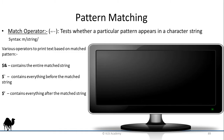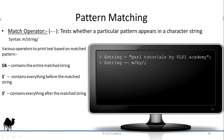Let's see one example. Assume there is a string variable with value 'perl tutorials by VLSI Academy'. To apply the match operator, you write: $string =~ m/by/. When we write the statement print $`, it will match with 'by' in this string and print everything before it. So 'perl tutorials' will be the output.